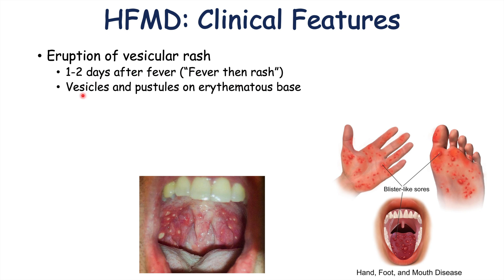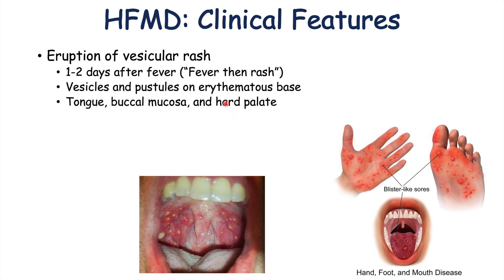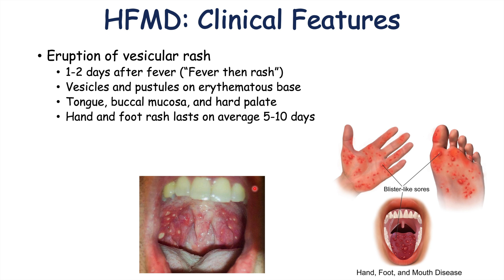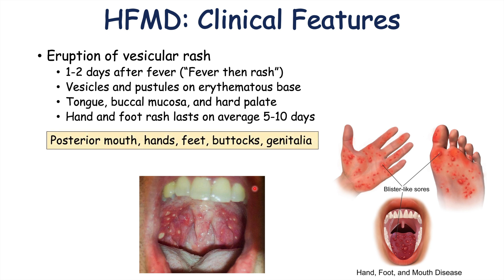Vesicles are fluid-filled raised skin lesions. Pustules are pus-filled skin lesions, and erythematous means the skin is reddened. The rash can occur inside the mouth on the tongue, buccal mucosa, and hard palate. It appears first inside the mouth and then starts to occur on other parts of the body — the hands and feet. The hand and foot rash lasts on average 5 to 10 days. Other areas that can be affected include the buttocks and genitalia as well.